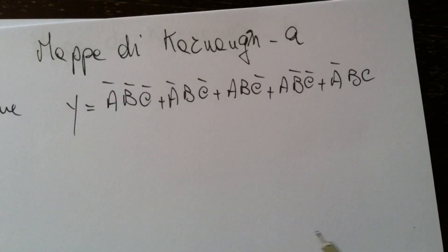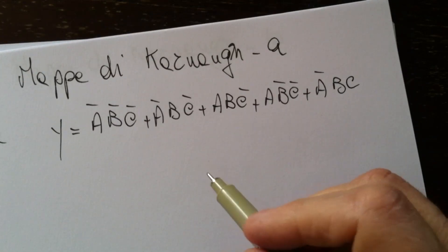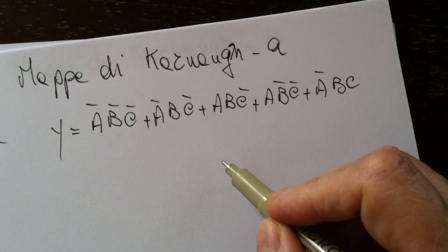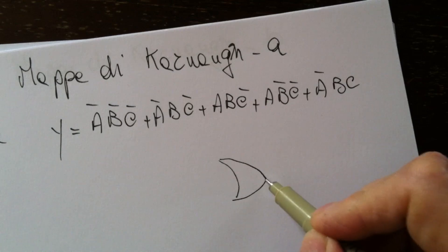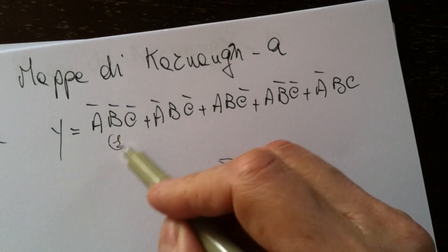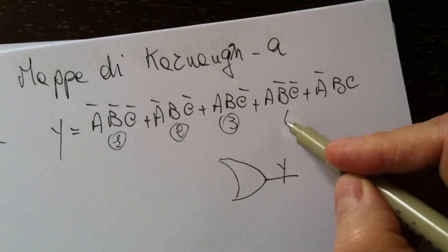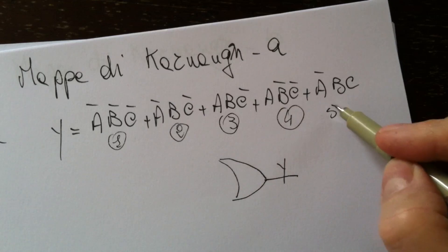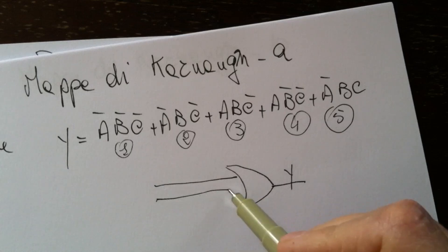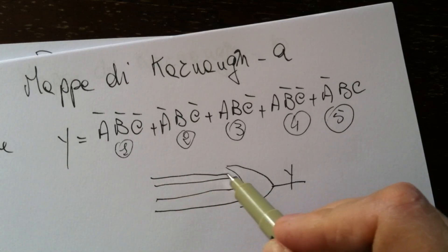If we had to realize this circuit in just one way, we would use a NOR port, which is drawn like this. This port has five inputs: the first one, the second one, the third, the fourth, and the fifth.